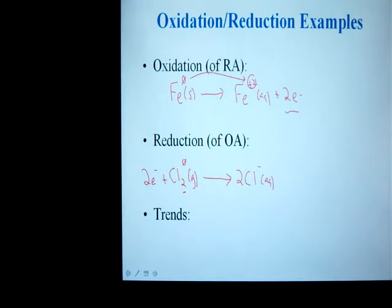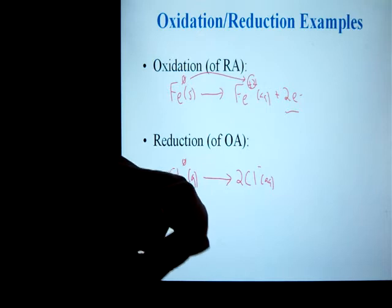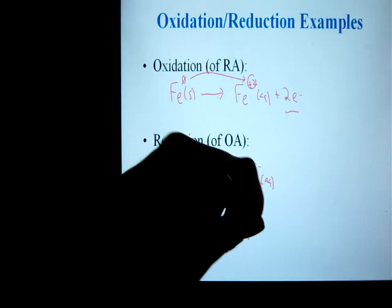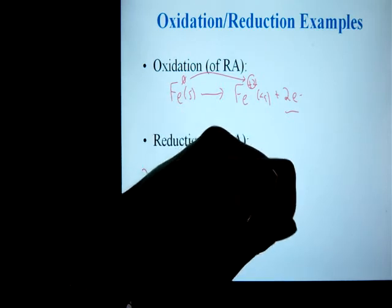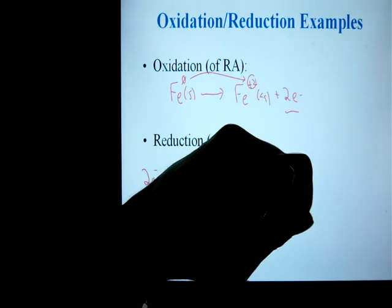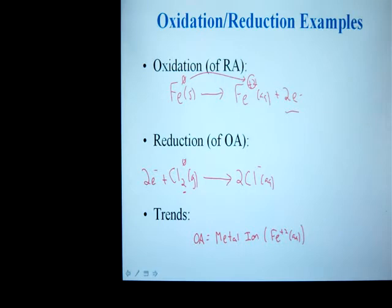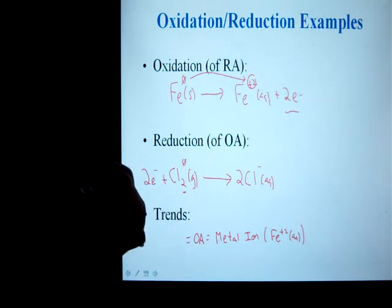Now, as far as the trends go, what I'm referring to is certain entities are always going to be oxidizing agents, certain will always be reducing agents. For oxidizing agents, if you are a metal ion, like iron 2 for instance, any positive metal ion can gain electrons, therefore it would be an oxidizing agent. Opposite of that would be any pure nonmetal, like chlorine gas.